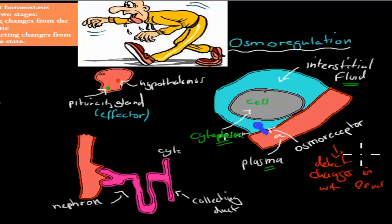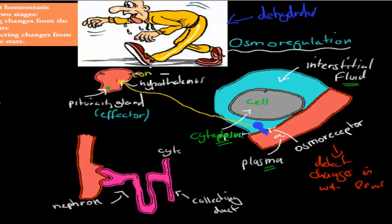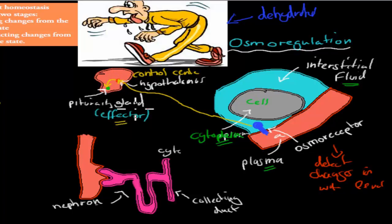If, for example, we are running a lot and we are really dehydrated — like this person might have run a marathon — the osmoreceptors pick up that there's less water than usual and send a signal. This yellow line is our signal, because the osmoreceptors picked up that we're dehydrated and there's not enough water around. So that signal gets sent to the hypothalamus, which is part of our brain and acts as the control center. The control center decides we need to increase our water level, so it sends a signal to the pituitary gland, which is also in our brain — that's the effector organ that makes the response happen.